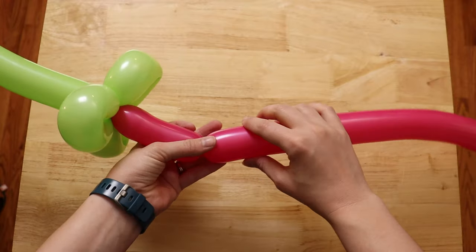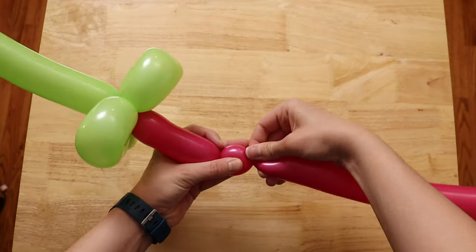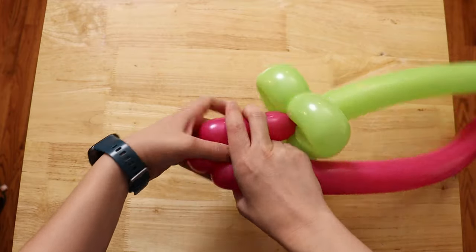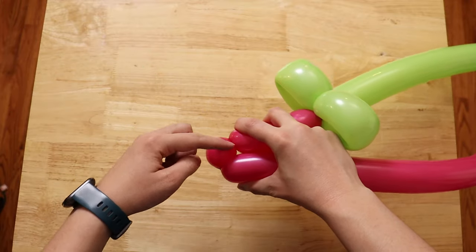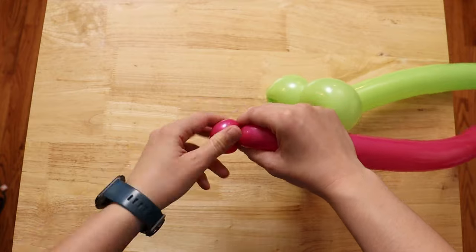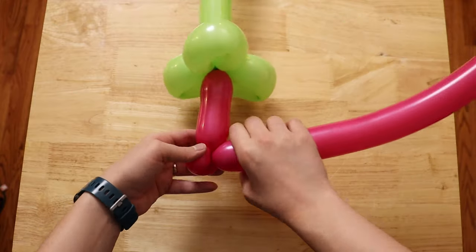And to make a pinch twist, first make a bubble, and then fold the balloon over so that the twists on either side of the bubble can touch each other. Pinching those together and twisting it around, that will complete your first pinch twist.